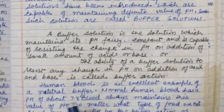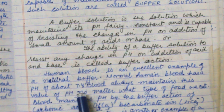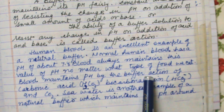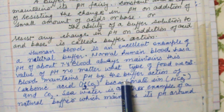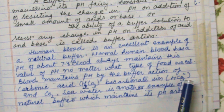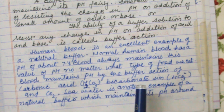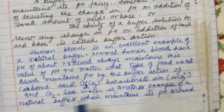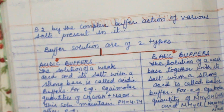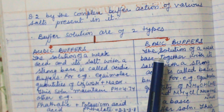Human blood is an excellent example of a natural buffer. Normal human blood has a pH of 7.4. Blood always maintains this value of pH no matter what type of food we eat. Blood maintains pH by the buffer action of carbonic acid (H2CO3), bicarbonate ion (HCO3⁻), and CO2. Seawater is another example of a natural buffer, which maintains its pH around 8.2 by the complex buffer action of various salts present in it.